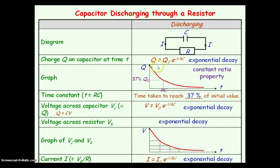To summarise: the charge stored on the capacitor while it's discharging, the voltage across the capacitor while it's discharging, and the current in the circuit while the capacitor is discharging — all follow an exponential decay.